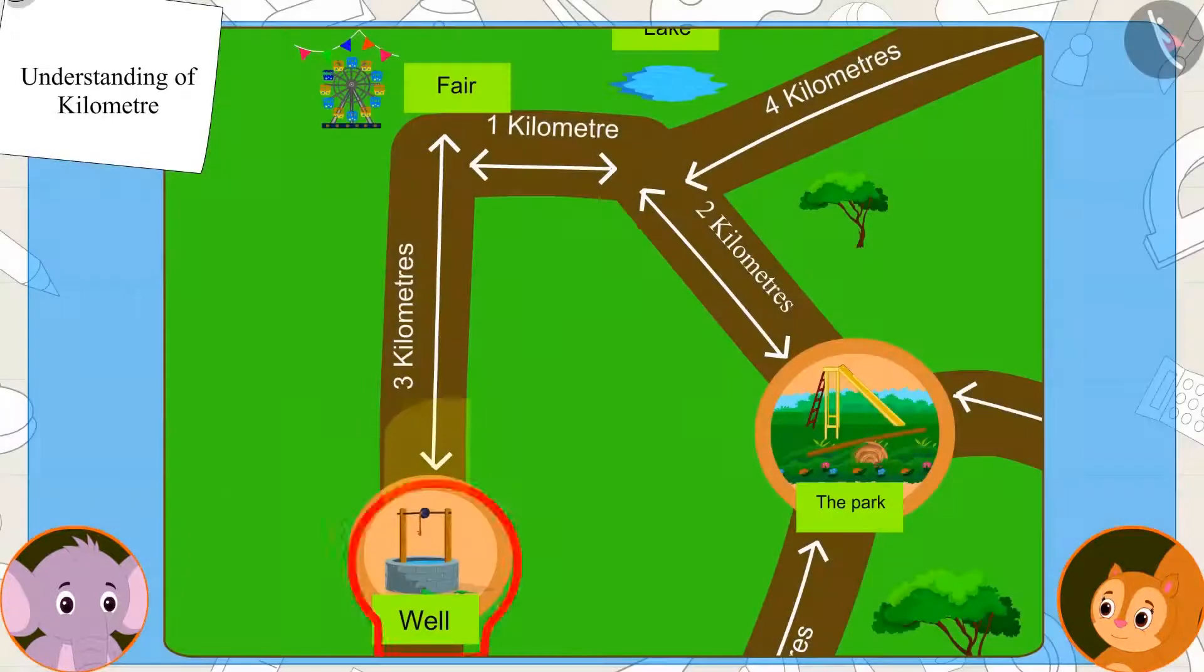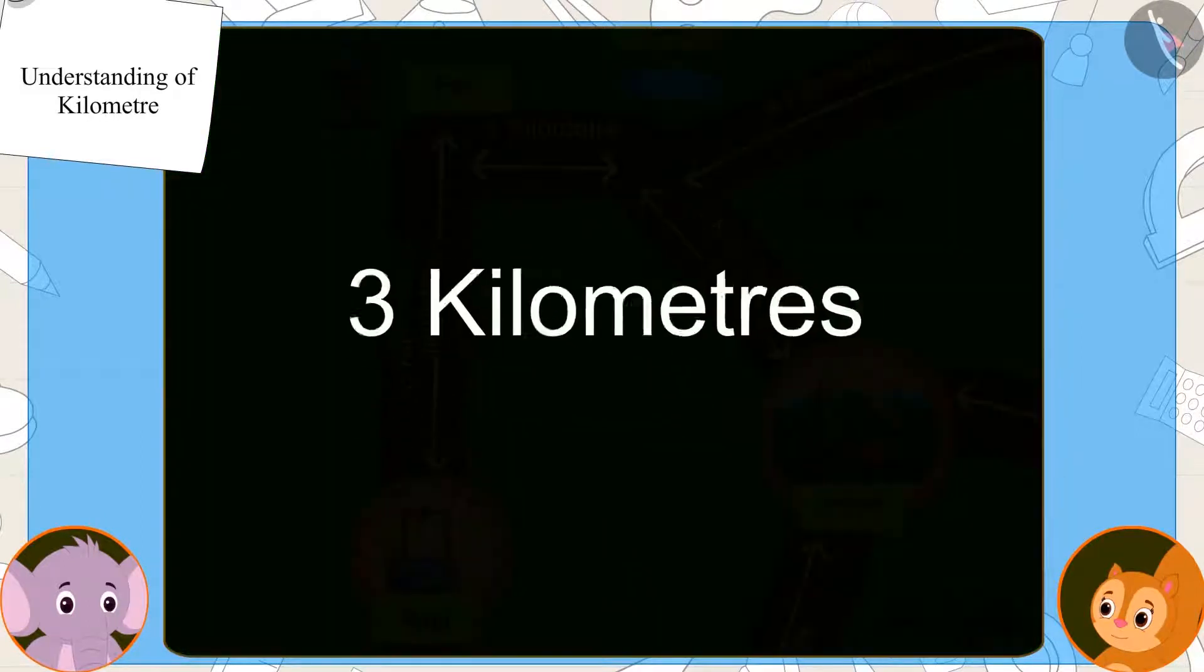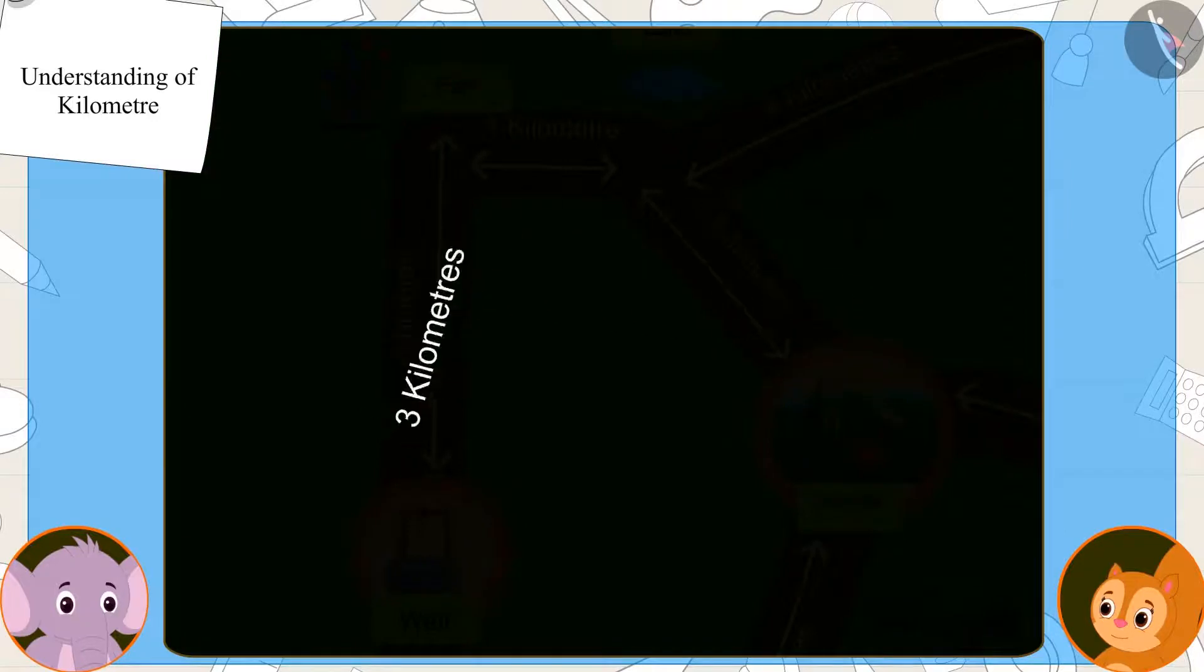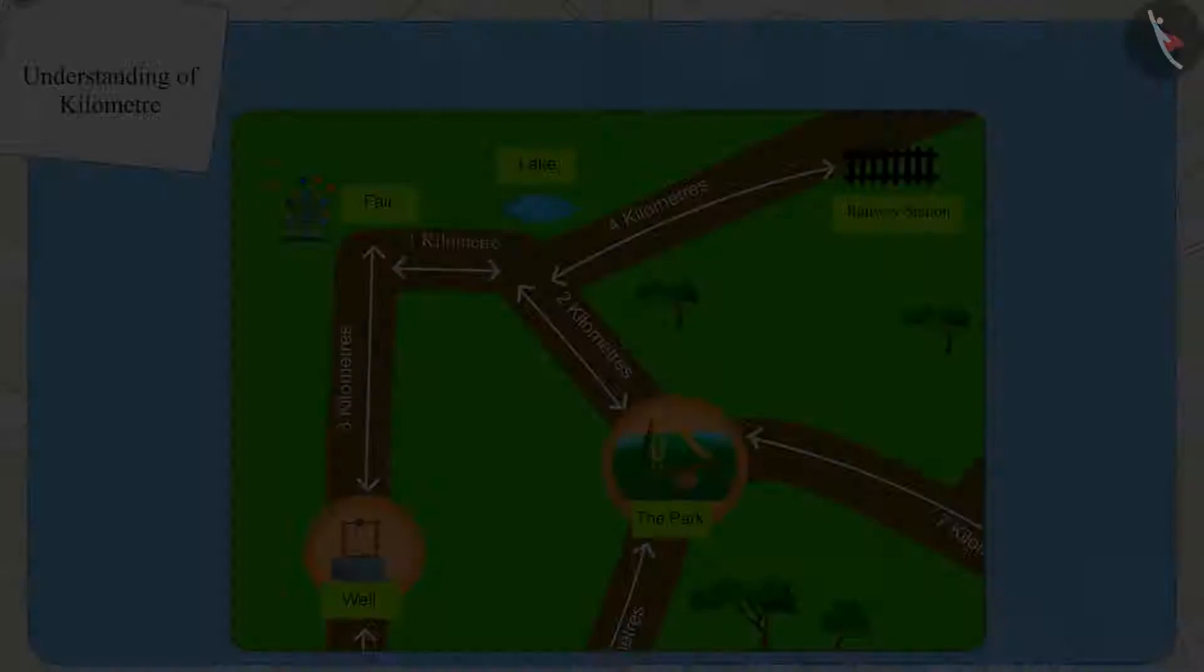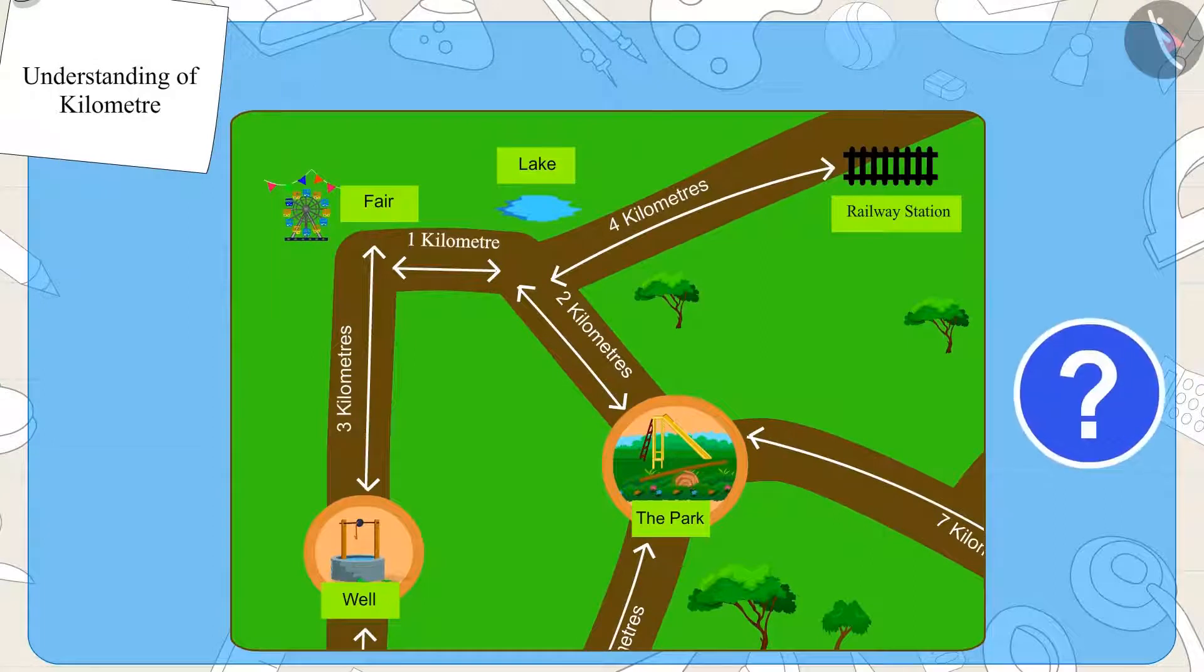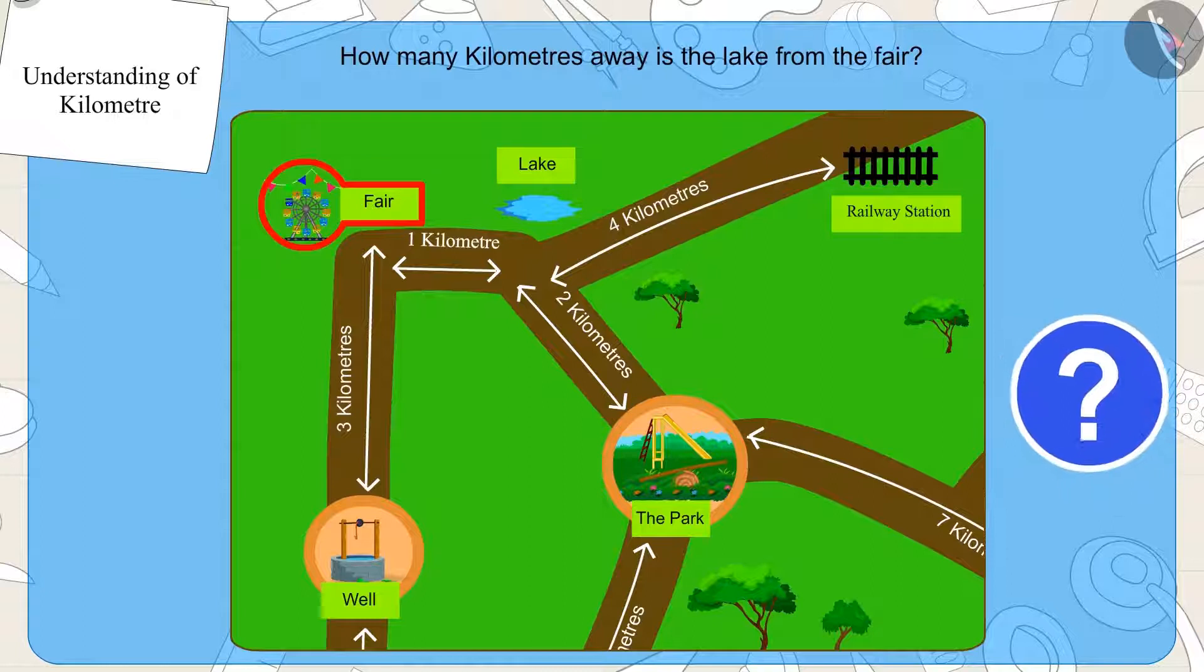You can see the distance from here to the fair on the map. See, the distance is written on the map as three kilometers, Appu said to Chanda. Kids, can you see this map and tell how many kilometers away from the fair is the lake?